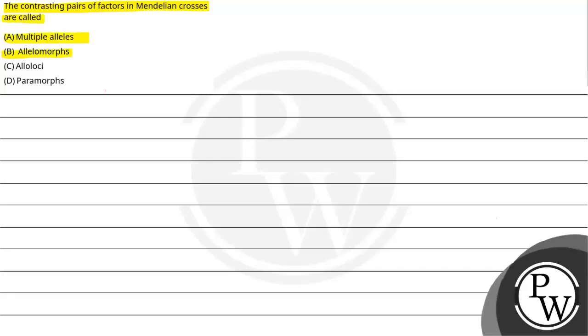Option A: multiple alleles, Option B: allelomorphs, Option C: allolokai, Option D: paramorphs. The question asks what contrasting pairs of factors in Mendelian crosses are called.